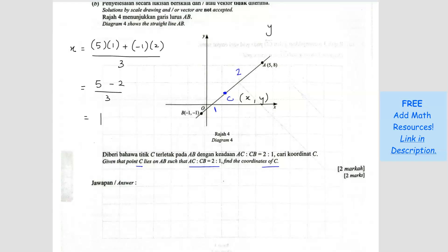Now we can do for Y. So Y is going to be the same thing, but the only difference is now you're using the Y value. So 8 times the opposite is 1 plus negative 1. The opposite is 2 divided by 3. So you get 8 minus 2 divided by 3. So answer is 6 over 3. Answer is 2.